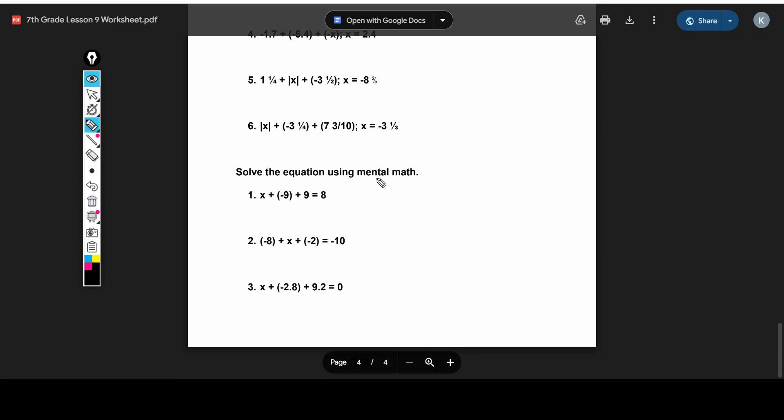And then now we're going to solve these equations using mental math. This should be pretty easy because it's mental math. So x plus negative 9 plus 9 equals 8. You can do this in your head, but I'll draw it out a little. Negative 9 and 9 cancel out. So we just get x equals 8.